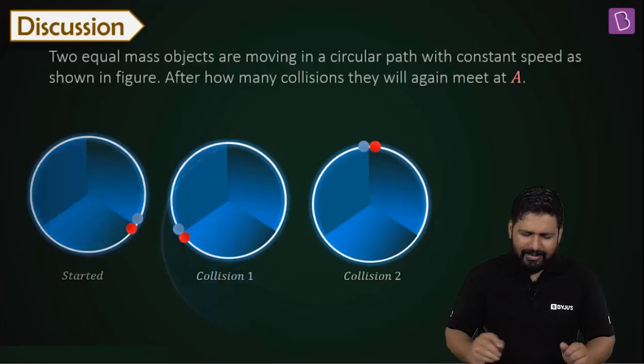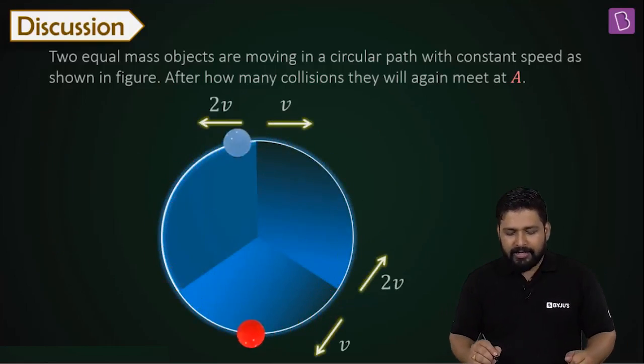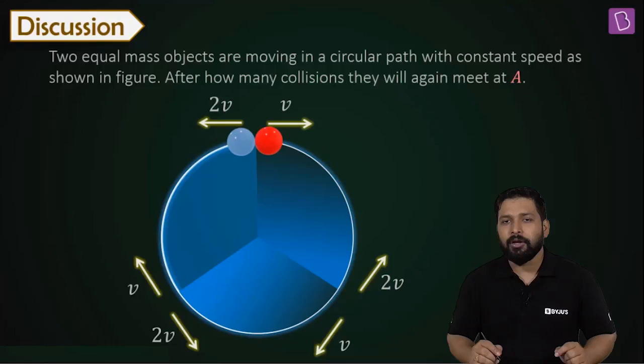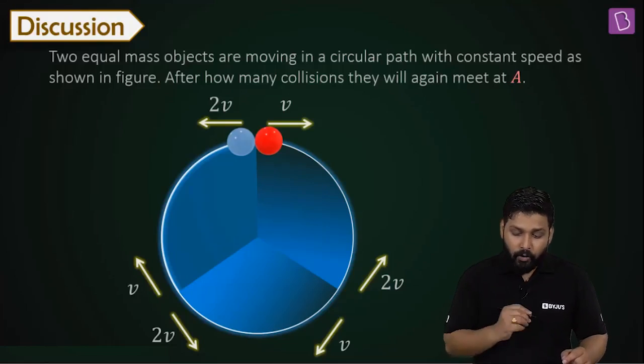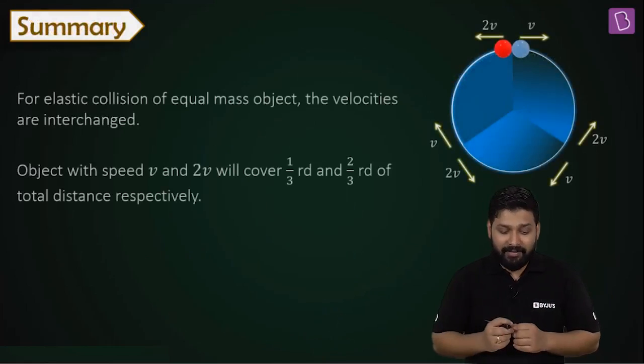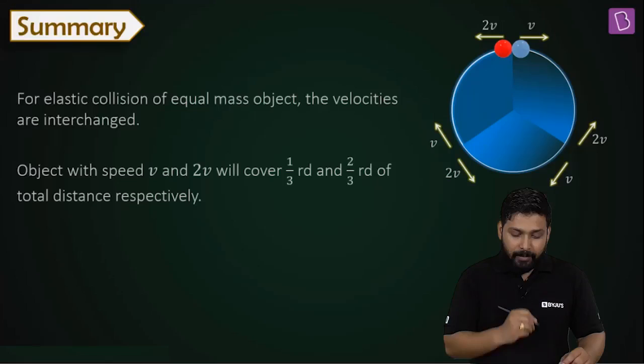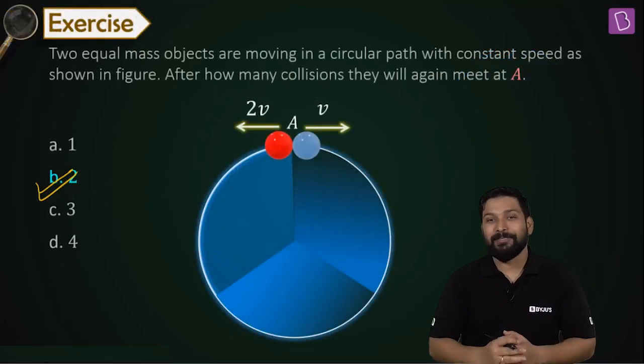Let us see this one final time. Once 2V and V go and hit, velocity gets exchanged. Again, second collision and third time they meet again. Which means the total number of collisions that took place before they again arrived at point A was equal to two. So which option comes out to be correct? Yes, it's option B. That's right for this particular question.